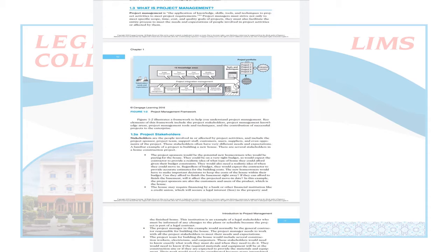Third: the project manager in this example — very important — the project manager will also be a stakeholder. Stakeholder means that he is equally affected, equally has a stake, equally has a concern — because if your project is successful, tomorrow you will again ask that same manager to do your work. Fourthly: the project team of building the house — exactly.